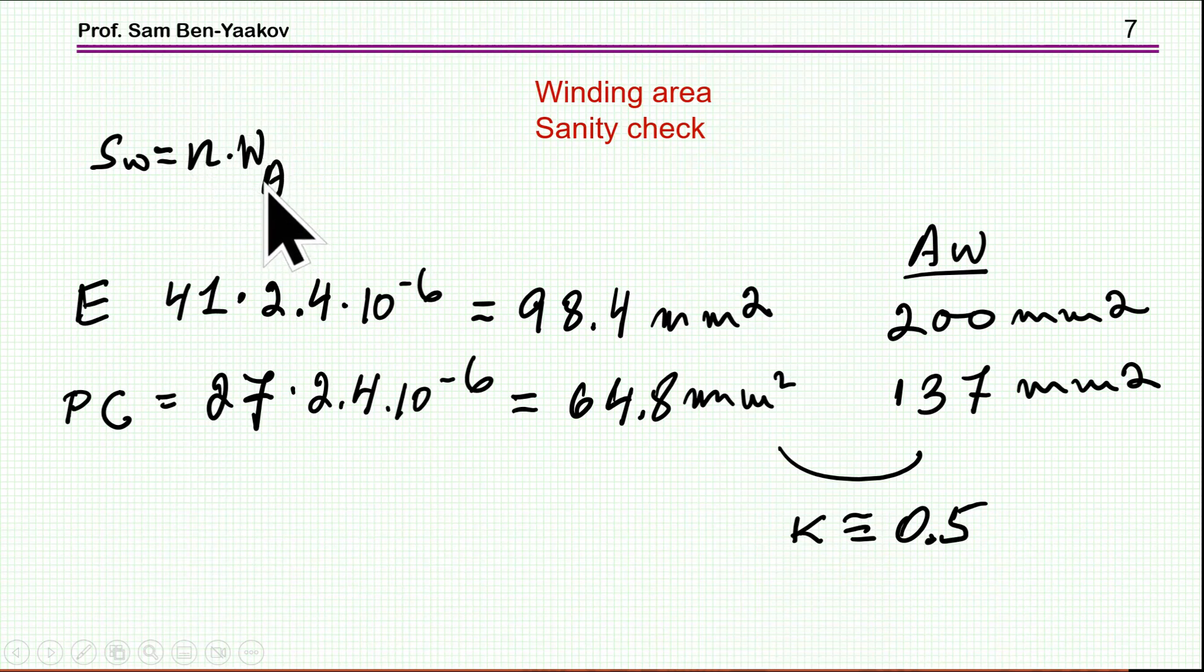So, this is the number of turns, and this is the cross-section area of the wire. I multiply this, I get here 98 mm^2 for the E-core, and for the pot-core, I'm getting 64 mm^2. The winding areas of these two cores that I've seen earlier from the datasheet are 200 and 137. And as you can see, I have here an area which is twice the sort of nominal or theoretical copper area, without taking into account the packing, and I've specified 0.5 packing, and lo and behold, comes out to be exactly what I expect. This is like a miracle here, I'm always astonished how well does it fit.